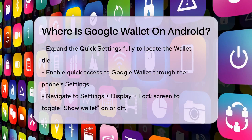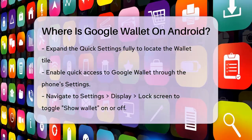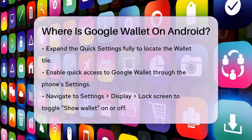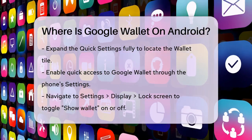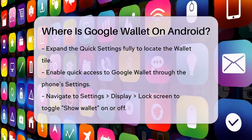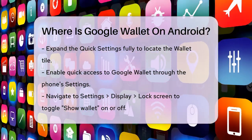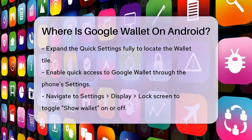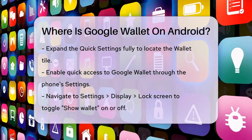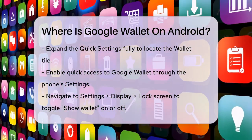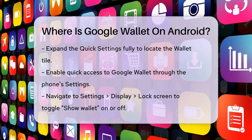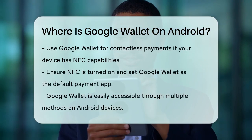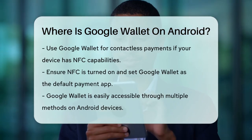If you prefer a more direct approach, you can turn on Quick Wallet access from your phone's settings. Go to the Settings app, tap on Display, then Lock Screen, and toggle the Show Wallet option on or off. This will allow you to access Google Wallet directly from your lock screen.